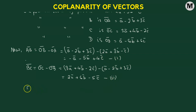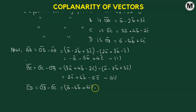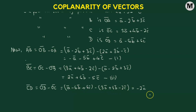Now we find the vector CD. CD = OD - OC = (a - 6b + 6c) - (3a + 4b - 2c). This gives us -2a - 10b + 8c. This is equation number 3.